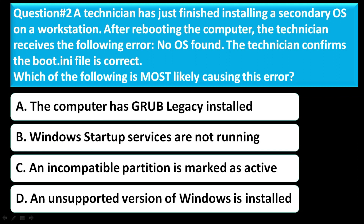Question number 2: A technician has just finished installing a secondary OS on a workstation. After rebooting, the technician receives the error: No OS found. The technician confirms the boot.ini file is correct. Which of the following is most likely causing this error? Option A is the computer has GRUB legacy installed, Option B is Windows startup services are not running, Option C is an incompatible partition is marked as active, Option D is an unsupported version of Windows is installed. The correct answer is C — an incompatible partition is marked as active.